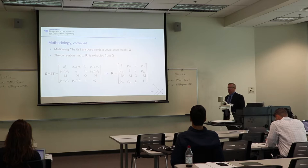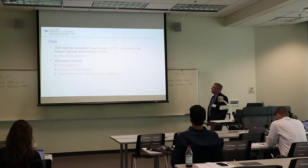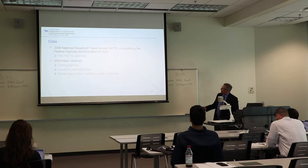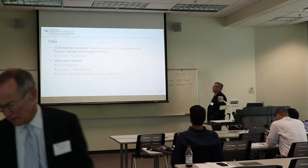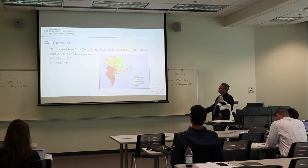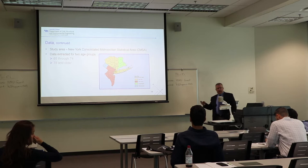The data used in this study is the 2009 National Household Transportation Survey conducted by the Federal Highway Administration — a large survey. Information obtained includes demographics, locational characteristics, population densities, and a travel diary where individuals specified the time, location, activity, mode, and purpose of their travel. The study area was the New York Consolidated Metropolitan Statistical Area, consisting of parts of New York City, Connecticut, New Jersey, and Pennsylvania.